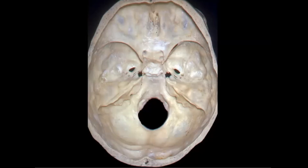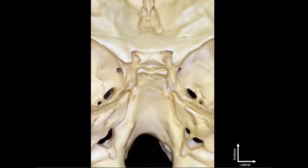Last time we spent the majority of our time in the anterior and middle cranial fossa. Today we're going to be focusing on the posterior cranial fossa. This is a top-down view of the midline skull base. The top of the image is anterior, the bottom is inferior and posterior, and the left and right sides are lateral.